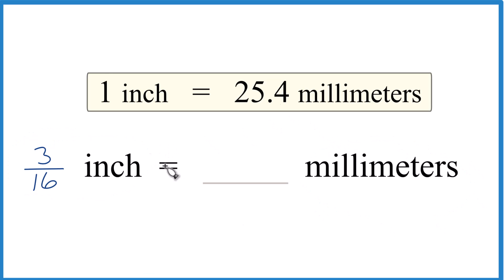First off, if you do this a lot, like with drill bits for example, you can just download a chart with all of the inches to millimeters conversions. But you could also, if you recognize that one inch is 25.4 millimeters, we could convert 3/16th inch to millimeters pretty easily.